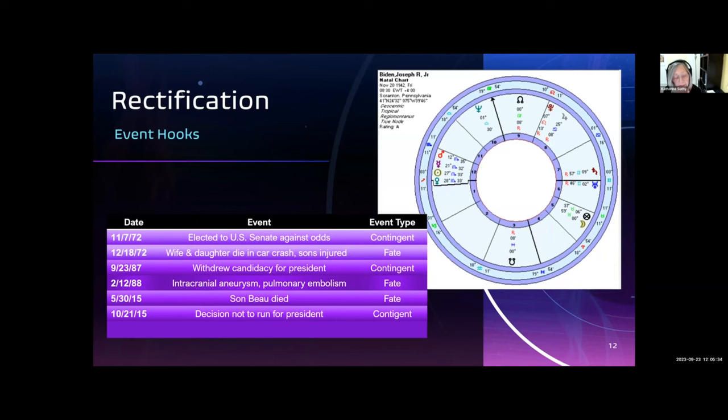The given birth time is 8:30 a.m., and it has a Rodden rating of A from someone's memory. This time could have been rounded off with the actual time being somewhere between 8:15 and 8:45 a.m. In terms of primary directions, that's a possible error of plus or minus three years or so.